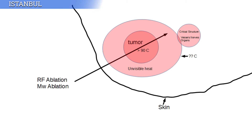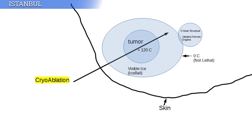In cryoablation, the system is very different. Of course, the technique is the same — like microwave and RF ablation, we use needles and insert them into the tumor. When we run the cryoablation machines, we produce cryo ablation zones around the tumor, but in this case the ablation zone changes into ice balls. So we can easily see them — we produce visible ice balls around the tumor.